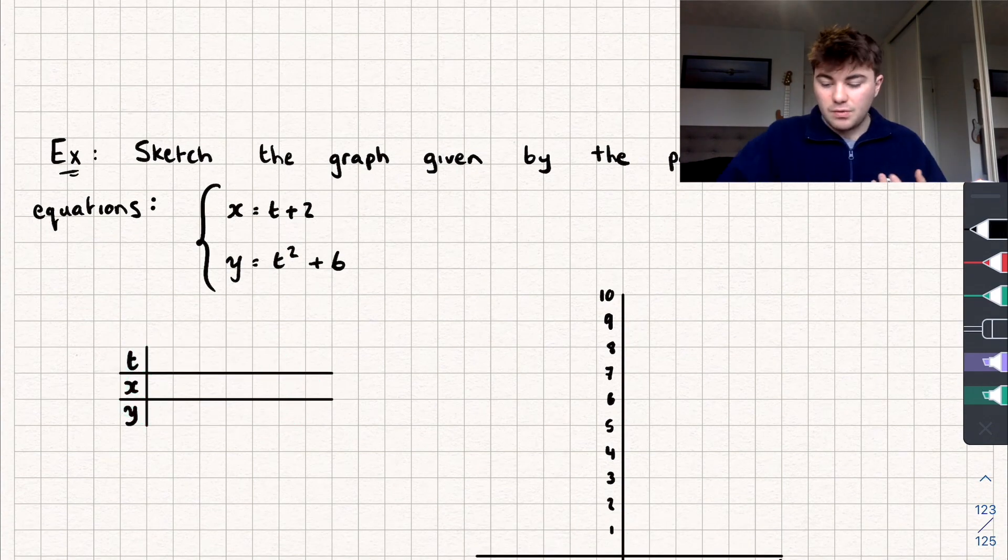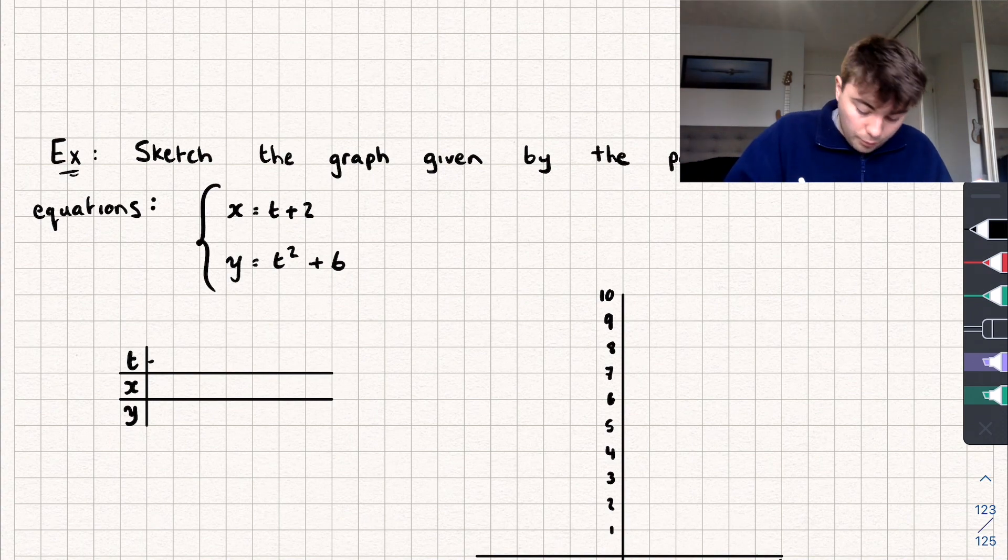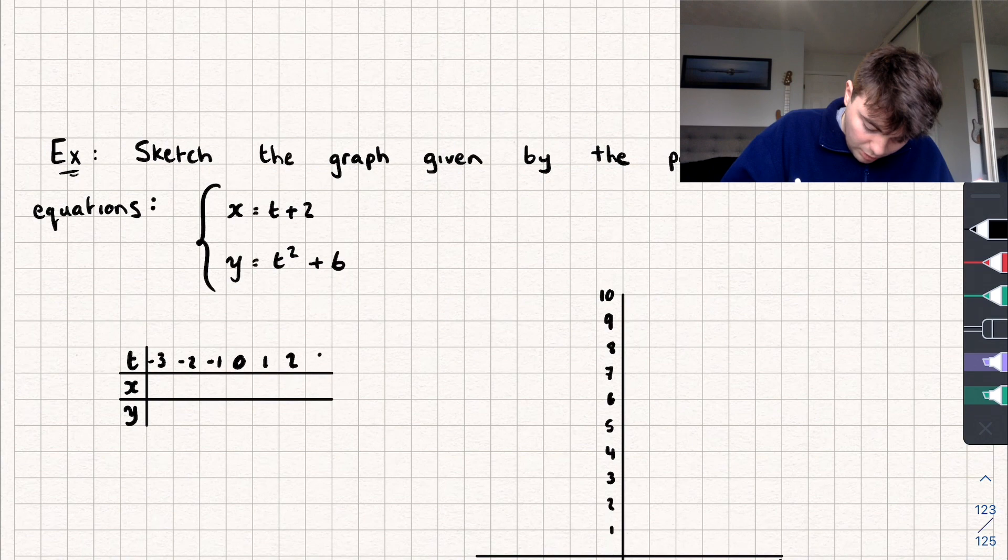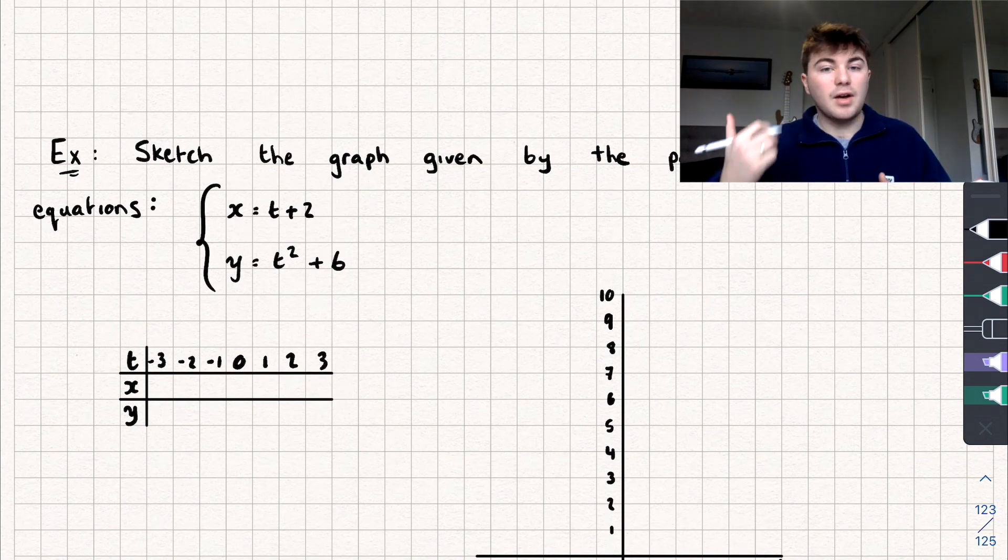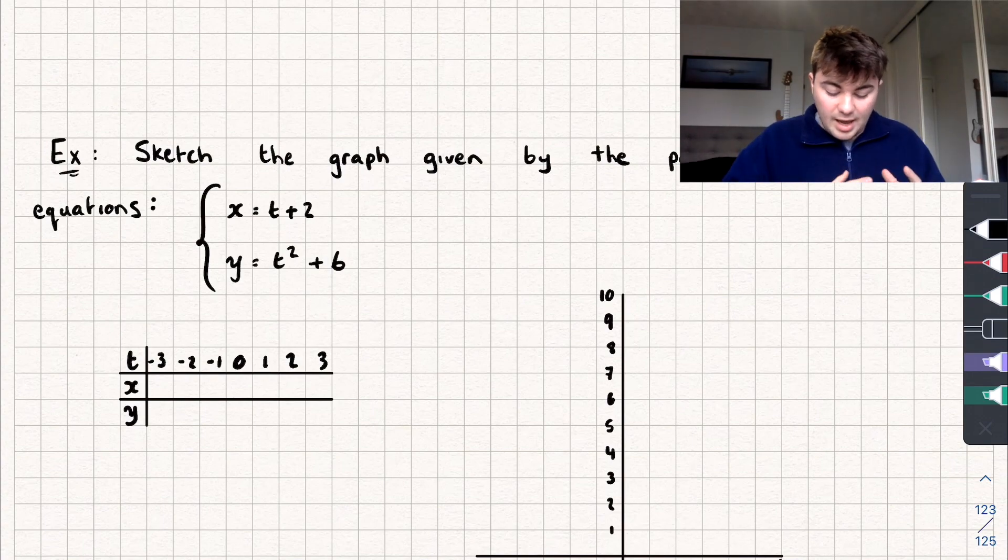So we're going to take some values for our parameter t. I'm going to go from negative 3 up to positive 3. And then what we're going to do is write down the values of x and y for each given value of t.